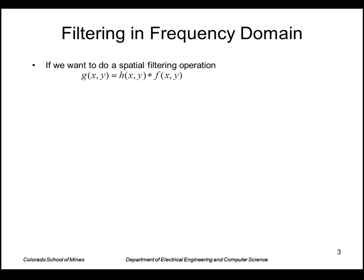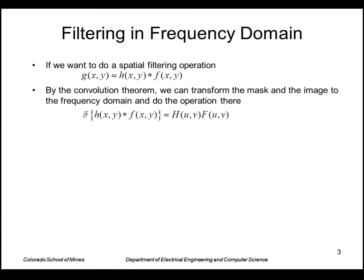One of the most important applications of the frequency domain concepts is using it to do convolutions. Recall that by the convolution theorem, if we want to convolve a filter H with an image F, that is equivalent — the Fourier pair — to the Fourier transform of the filter times the Fourier transform of the image. So those are point-by-point multiplications instead of convolutions. To go back to the spatial domain, we take the inverse Fourier transform of that product.